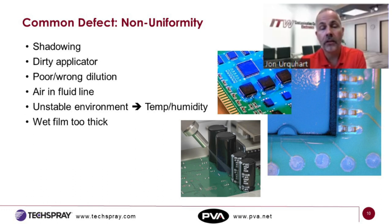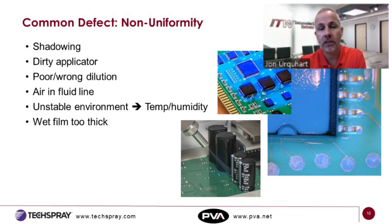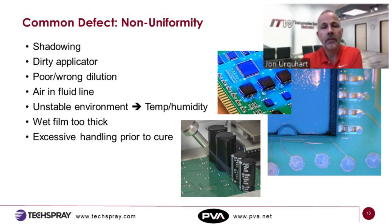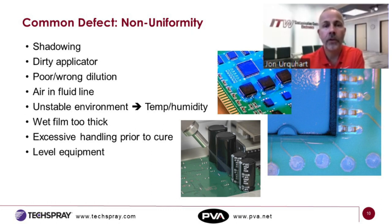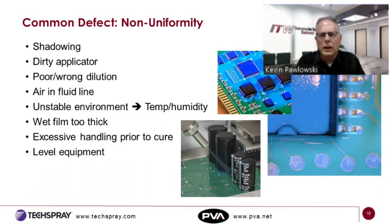Thickness is key — too much coating on the substrate can lead to pooling, buildup, and dripping. After coating, consider what happens to the substrate: does it transfer through an inline curing oven, or does an operator have to transport it to a ventilated oven? It's key to keep everything level and flat so the liquid coating doesn't fall, slide, or run to one side.